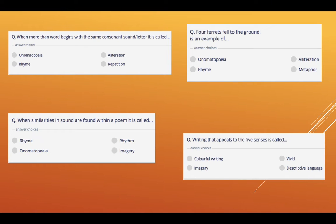So let's mark those. Number seven, consonant sound or letter will be alliteration. The next one, four ferrets fell to the ground. Four ferrets fell. They all begin with the same consonant sound or letter, alliteration. Similarities in sound, rhyme. And the last one, five senses, imagery.